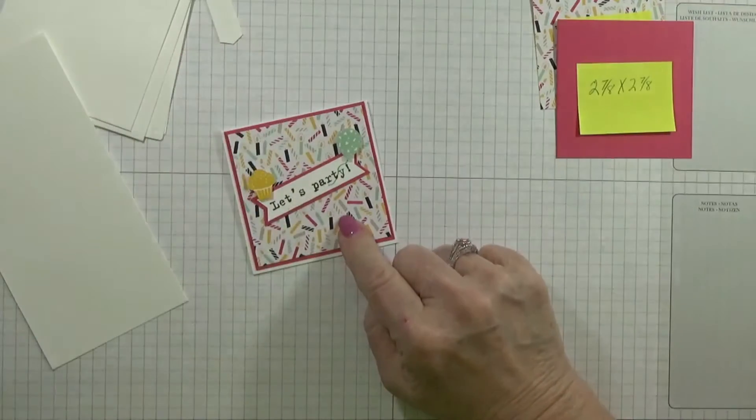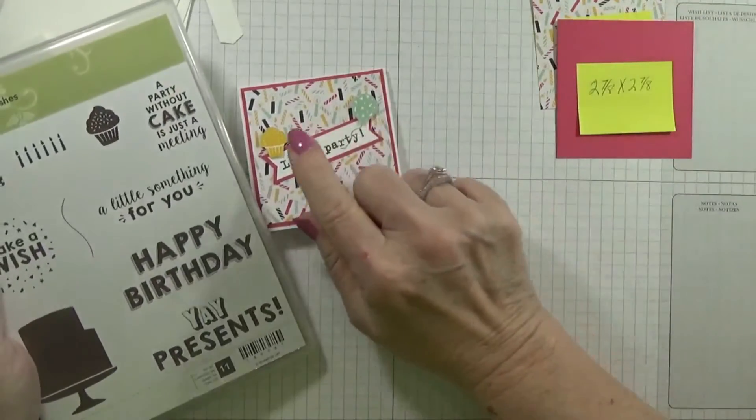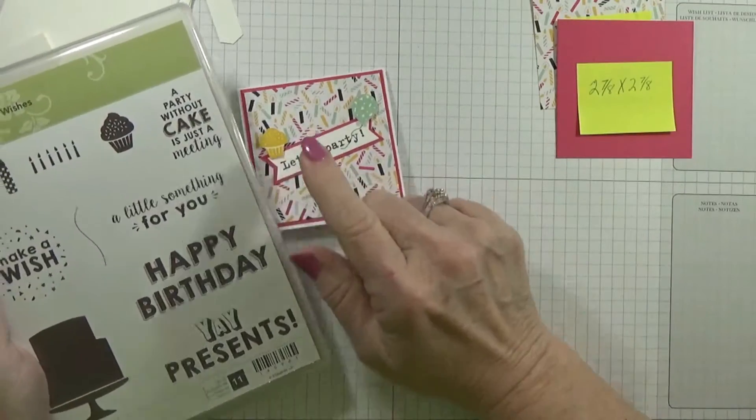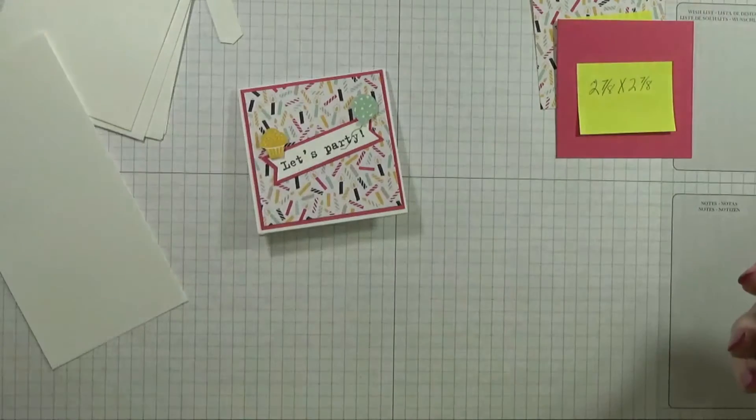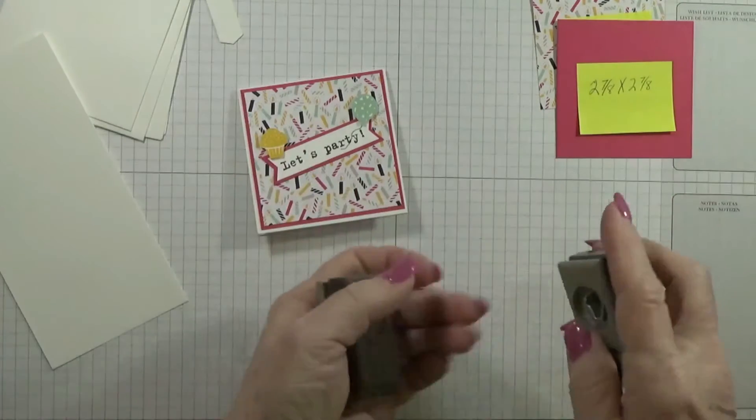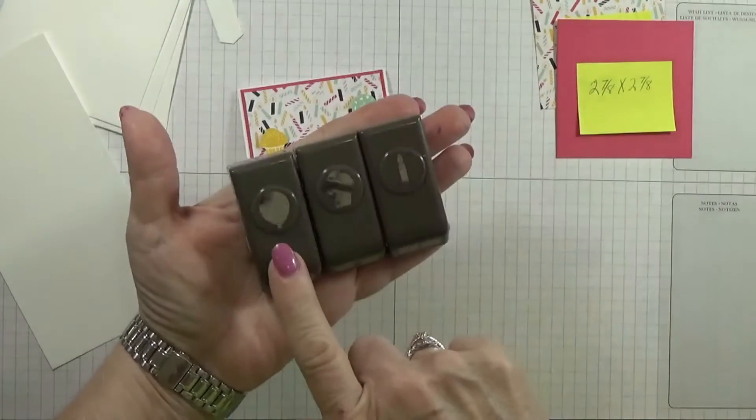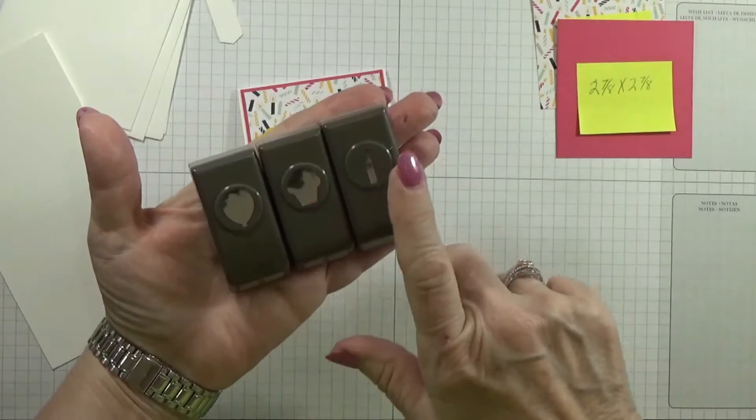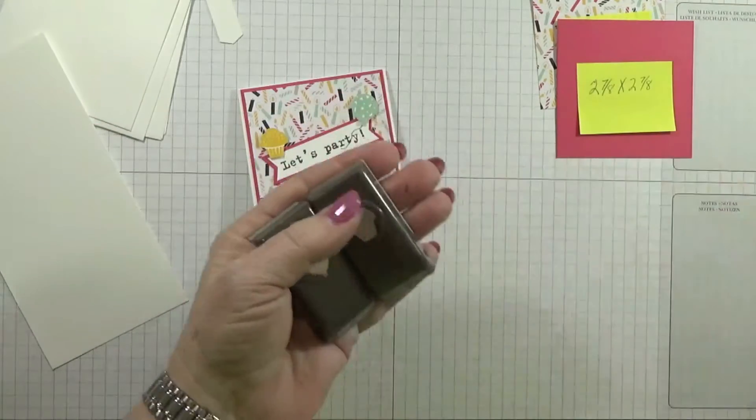Let's see, Party Wishes I used for the little balloon and the little cupcake, which is right here and right here. You can cut those out with these little bitty punches, mini punches. You got your balloon, your cupcake, and your candle, but I'm just using these two this time.